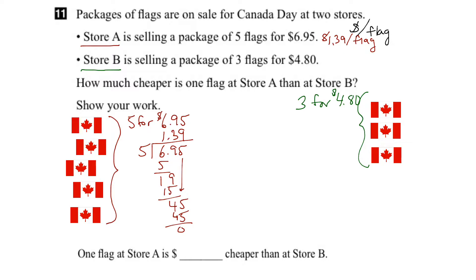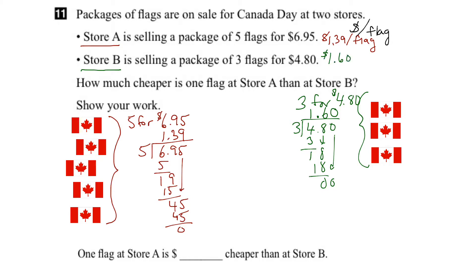Again we want the unit cost, so dollars per flag means take $4.80 and divide it by the number of flags, three. Three goes into four once, subtract, bring down the eight. Three goes into eighteen six times, that gives us zero, bring down the zero. Three goes into zero zero times. So the unit cost for store B is $1.60 per flag.